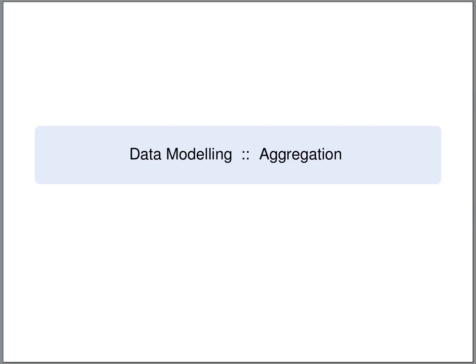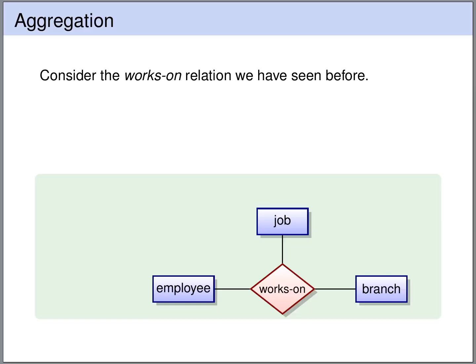Aggregation is a feature of entity relationship models that allows us to have relations between relations. Let's revisit the works-on relationship that we've seen before. Here we express that an employee can work on different jobs at different branches of the company.